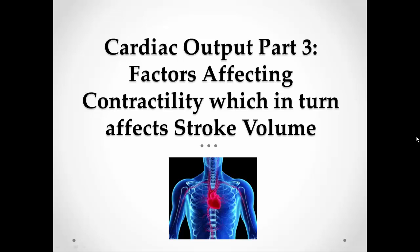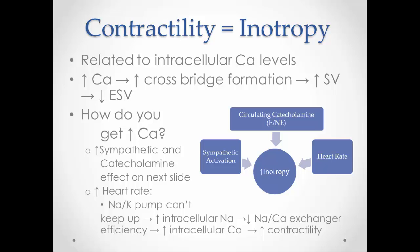In this video lecture, we're going to look at contractility and how that affects stroke volume and therefore cardiac output. Contractility is also called inotropy. It's related to intracellular calcium levels, so if I can increase calcium inside the cardiac muscle cell, I make more cross bridges, and therefore I get a stronger contraction. If I get a stronger contraction, I can push more blood out or eject more blood out of the heart, increasing stroke volume.